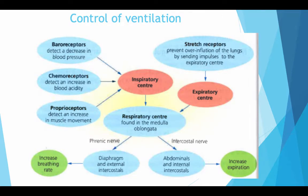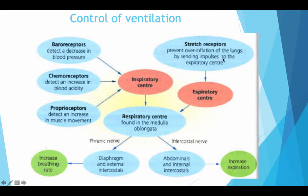Control of ventilation is broken down into the following diagram. These three factors link to the inspiratory centre, which then goes to the respiratory centre found in the medulla oblongata. This sends signals via the phrenic nerve to the diaphragm and external intercostal muscles to increase breathing rate. The medulla oblongata also controls the intercostal nerve, the abdominals and intercostal muscles to increase expiration. At the same time, stretch receptors prevent over-inflation by sending impulses to the expiratory centre and back to the medulla oblongata, which is the key structure controlling our breathing.